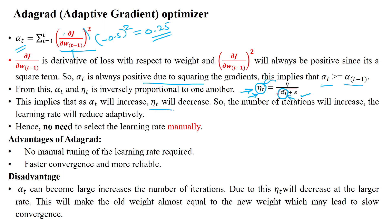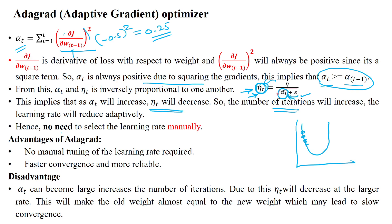When eta_t decreases, it needs more iterations to reach the convergence point, but alpha_t updates eta_t by changing at every iteration. Therefore, we do not need to select the learning rate manually as in other algorithms. Alpha_t also changes the learning rate at each epoch, making convergence faster than other algorithms. The advantages of AdaGrad are: no manual tuning of the learning rate is needed, and different rates for different parameters at each iteration make convergence faster and more reliable.